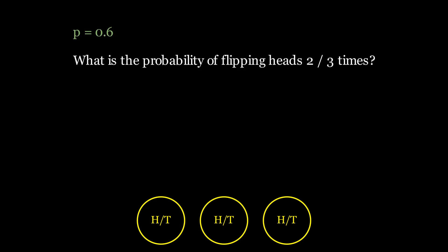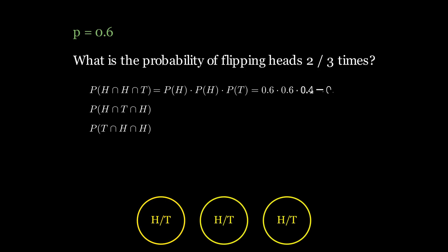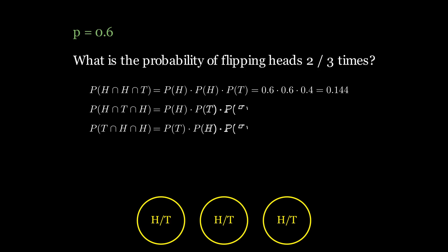To compute this probability, we need to take into account the fact that the first two flips could be heads and the last tails, or the first and last could be heads and the second tails, or the last two flips could be heads. We can compute the probability of getting heads in the first two trials but not the third, given that these flips are independent from each other. So the probability that events happen simultaneously is equal to the product of the events happening individually. This gives 0.6 times 0.6 times 0.4, which is the same as the probability of the first and last flips being heads, or the last two flips being heads.